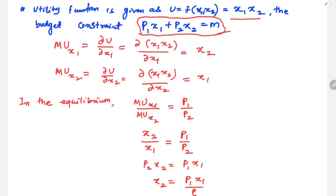At equilibrium, MUx1 / MUx2 = p1 / p2. The derivative of U with respect to x1 gives MUx1 = x2, and the derivative with respect to x2 gives MUx2 = x1. So MUx1 / MUx2 = x2 / x1 equals p1 / p2. This is the slope of the indifference curve equalling the slope of the budget line.